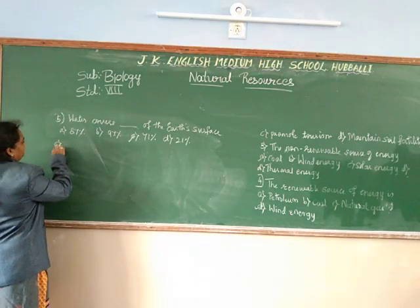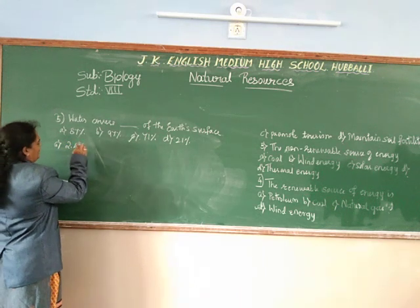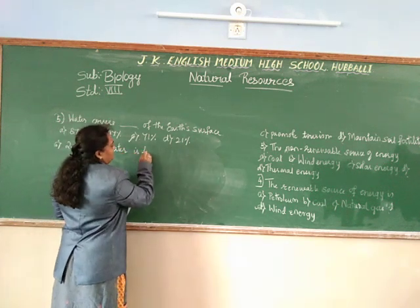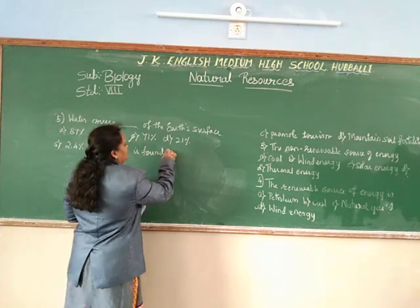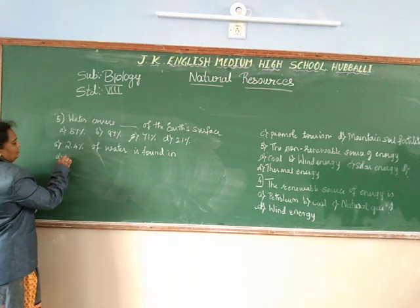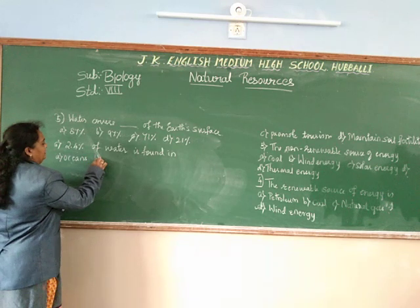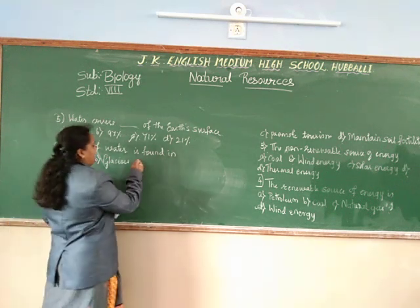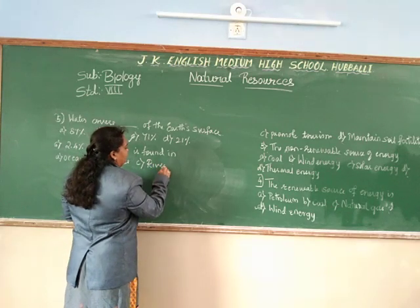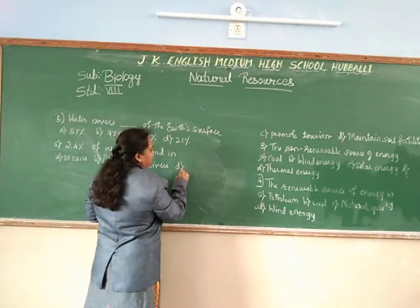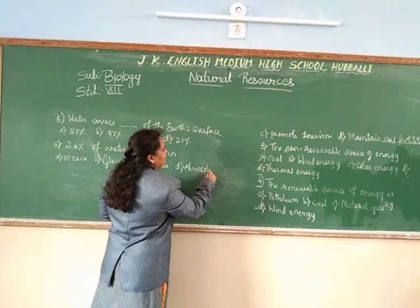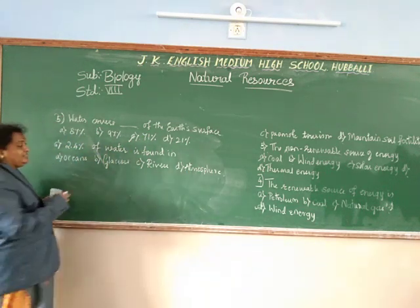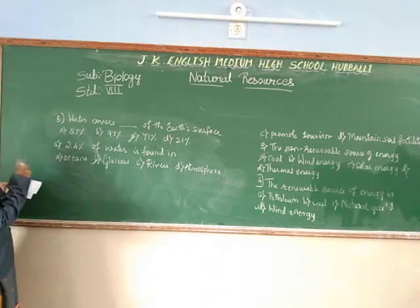Question 6: 2.4% of water is found in — options are: A) oceans, B) glaciers, C) rivers, D) atmosphere. As I told you, 2.4% of water is found in glaciers. Correct answer is glaciers.